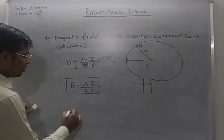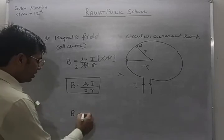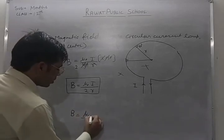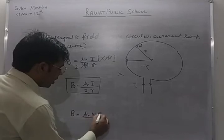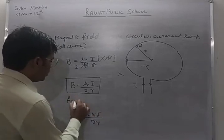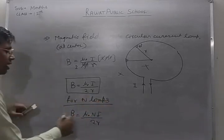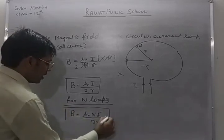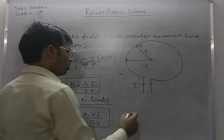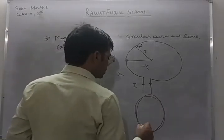This formula is for one loop only. If n number of loops are present, the modified magnetic field is: B = μ₀nI / 2R. In this way we can calculate the magnetic field for n number of loops.